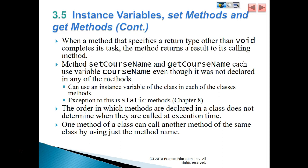When a method that specifies a return type other than void completes its task, the method returns a result to its calling method. Methods setCourseNamee and getCourseName each use the variable course name even though it was not declared in any of the methods. You can use an instance variable of the class in each of the class's methods. An exception to this is static methods.